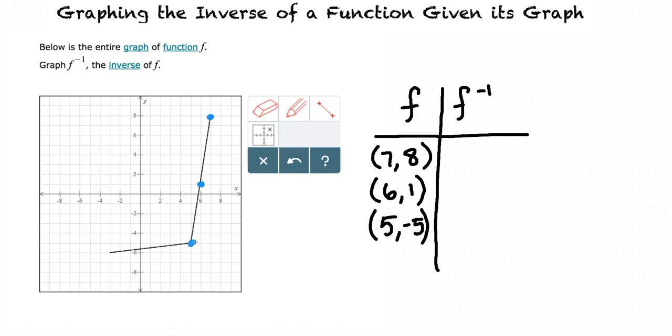Because the pattern changes a little bit after this point, let's find one more point. Another one is when x is equal to negative 3, and y is equal to negative 6.